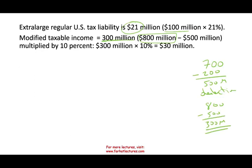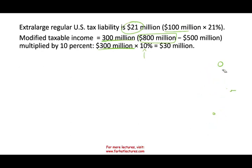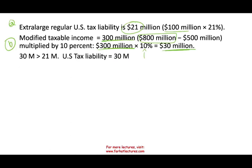We take the modified taxable income of $300 million and multiply it by 10% — the BEAT rate set by Uncle Sam — giving $30 million. Comparing: A (regular tax) = $21 million; B (modified) = $30 million. Is B greater than A? Yes, $30 million is greater than $21 million. So you have to pay $30 million, which means an additional $9 million in taxes. That's basically it — they came back and got more taxes out of you.